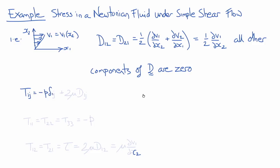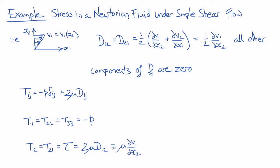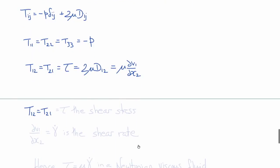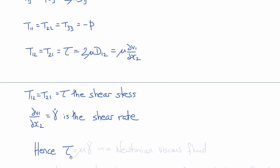Writing the constitutive law for an incompressible Newtonian viscous fluid, T_ij is equal to minus p delta_ij plus 2 mu D_ij. So T_11, T_22, and T_33 are simply minus p. T_21 and T_12, which are labeled tau, are therefore equal to 2 mu times D_12, where D_12 is one-half del v1 del x2, leaving us mu times del v1 del x2. The other shear stresses are zero, so this component tau is the only shear stress in the problem. Del v1 del x2 is sometimes called gamma dot, the shear rate, and hence we can write tau equals mu times gamma dot, just as we originally posited before deriving the general governing equation.